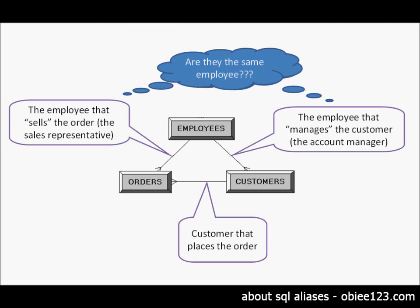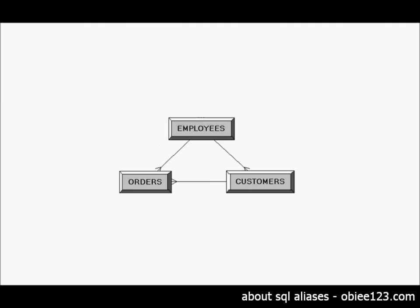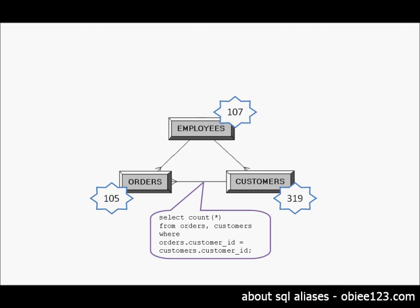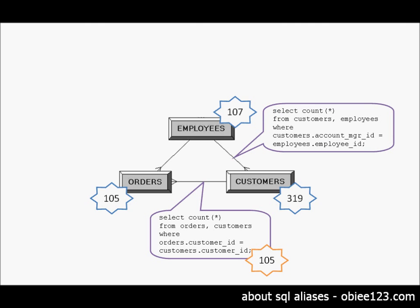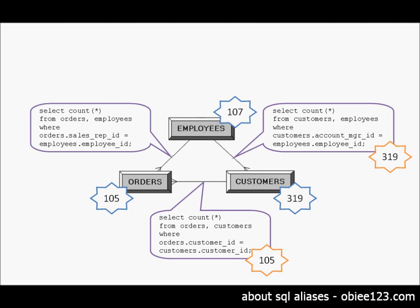Now let's consider what this means when you write a query on this schema. Looking at the row counts: the orders table contains 105 rows, there are 319 customers, and there are 107 employees. If we look at the join between orders and customers, every order has a related customer. We can see that every customer has a related account manager from the employees table — 319 rows in this query. And if we check the relationship between orders and employees, not necessarily every order has a related sales rep.